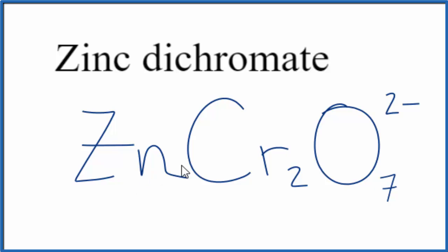Since zinc is a metal and this dichromate is an ion, this is an ionic compound and we need to have the charges balanced.